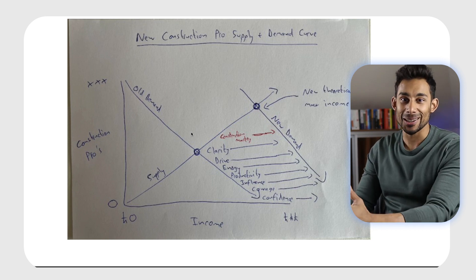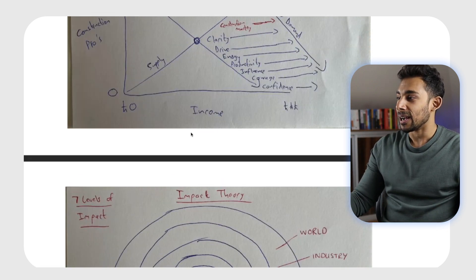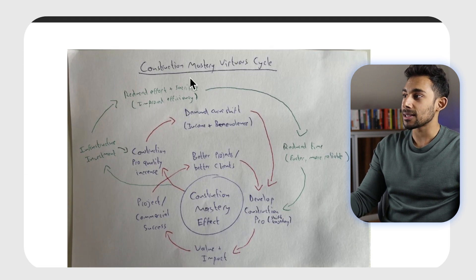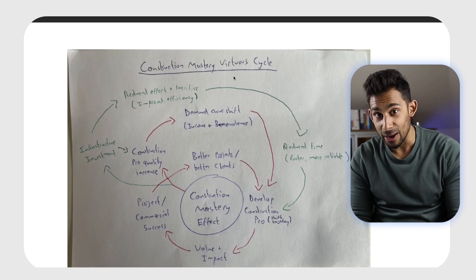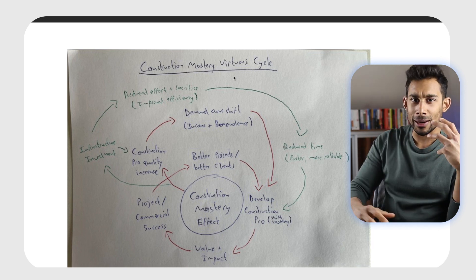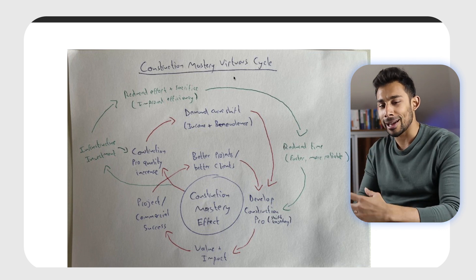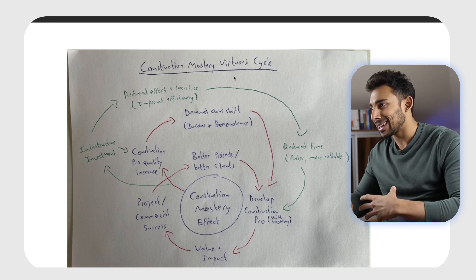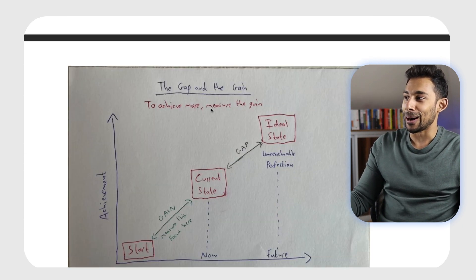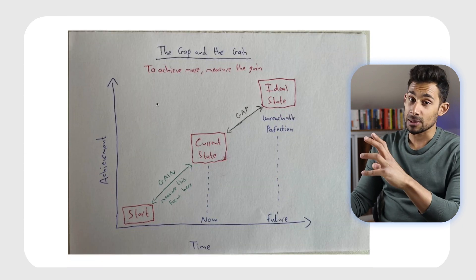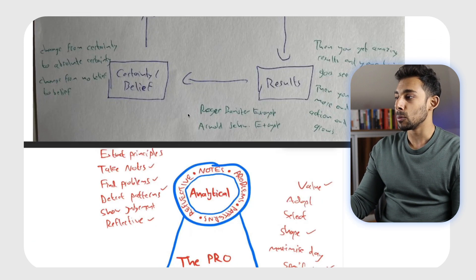Here's the impact theory. That's the construction virtuous cycle — that actually came from an idea of Amazon's flywheel, how they thought about their business. I read an article and thought: we can use that for this. I drew it, changed it, edited it, and researched what Amazon did and how they thought about it. That's the gap in the game model — one of the best models. I think I'm going to do a workshop on this inside of the platform soon because it's really special. The certainty loop — another model.